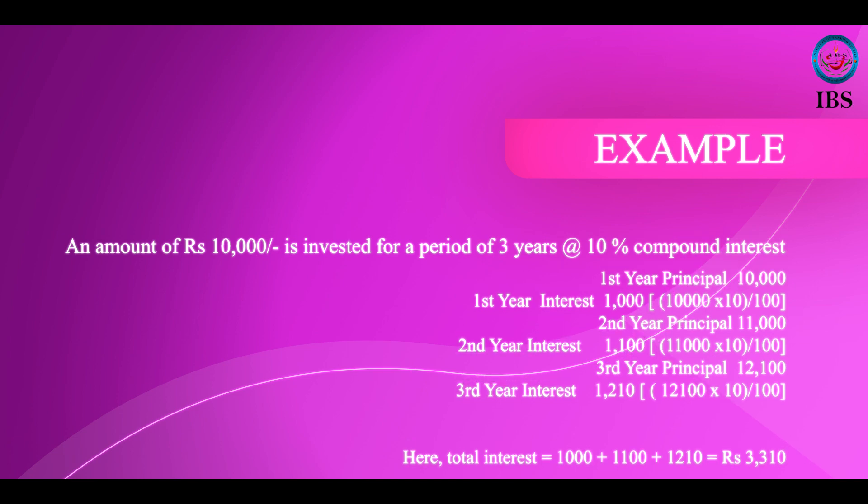Now coming to the important formula. The simple interest formula, as we learned in school, is I = P × N × R, where P is the principal amount, N is the number of years, and R is the rate of interest. The rate of interest is always represented in percentage, so if it is 10% it is 10/100. So the formula is principal into number of years into rate of interest divided by 100, and that gives you the simple interest amount.